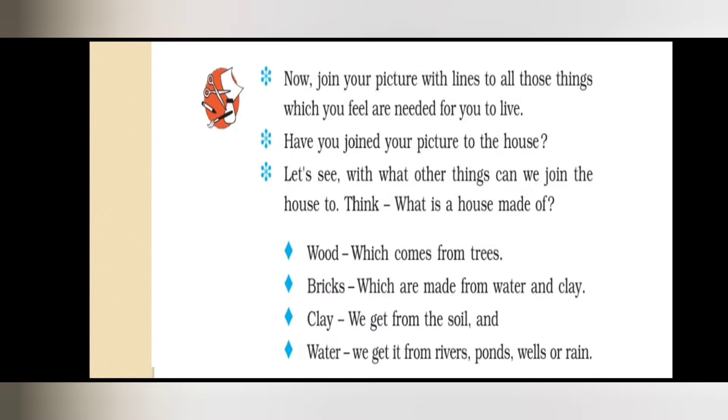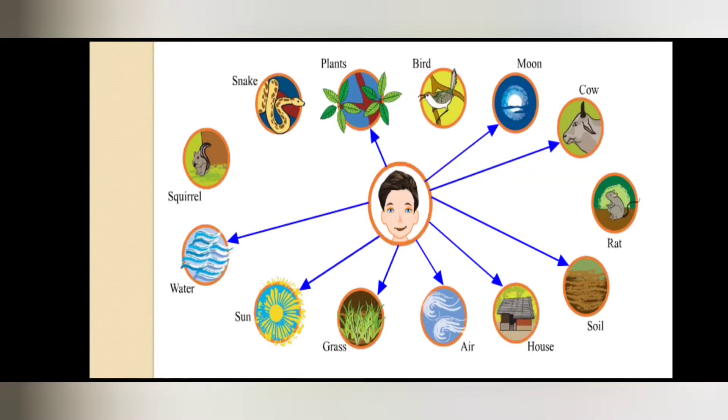So all the things we need to make a house are dependent on each other. Now if we need wood, we need trees for wood. If we need bricks, we need clay and water for bricks. For clay, we need soil. For water, we need rivers, ponds, wells, rain. So these things are interdependent. They have a need for one another.